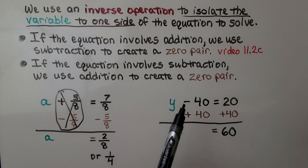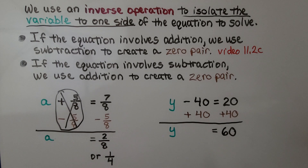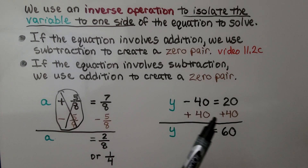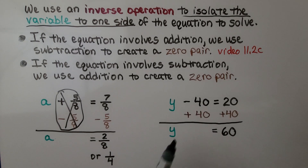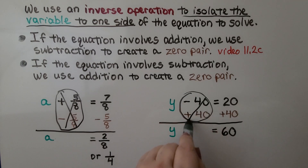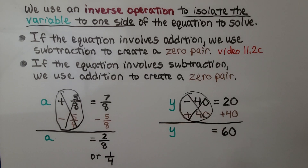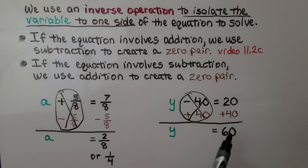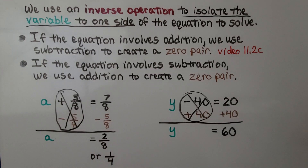Here we have a subtraction equation, so we're going to use addition to solve it. We have a minus 40, so we put a plus 40 on both sides of the equal sign. That is going to eliminate this minus 40. When we add 40 to this side, we get 60. We know y is equal to 60.